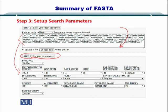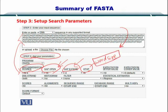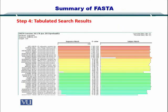Next, you set up your search parameters. The match and mismatch scores, gap penalties — including the opening and extension of a gap — and the K-tuples or word size are all available here. The word size is the size of the word that FASTA uses in searching the databases, along with some other parameters. Then you perform the search.